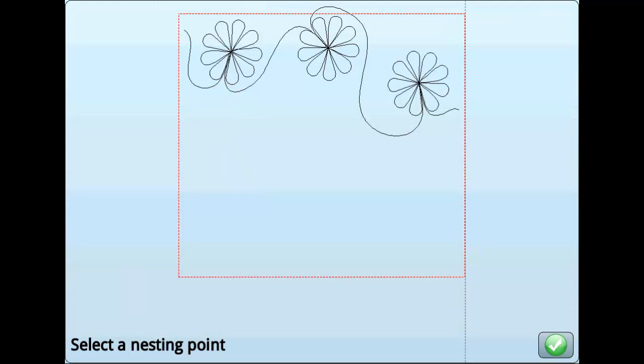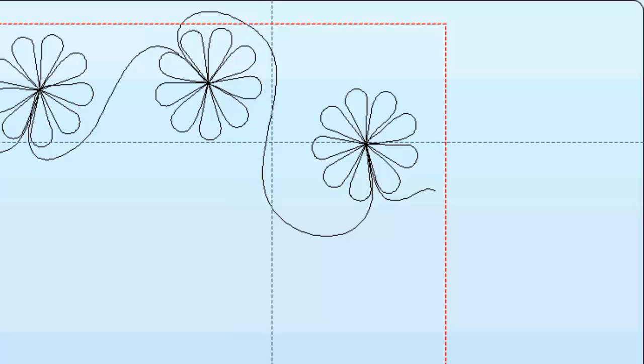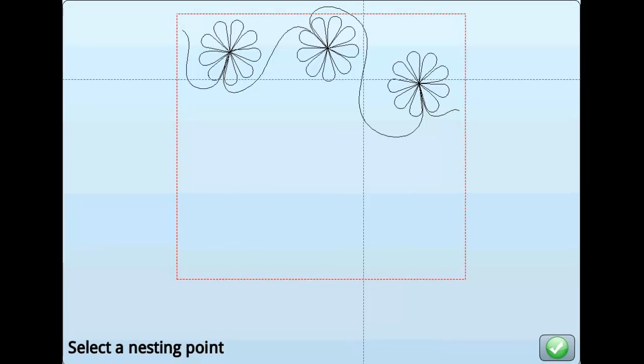After you have selected each of the marks on the rolled quilt, this preview will appear. Move your needle so that the crosshairs showing the needle position are over any point on the pattern. Then press the green check mark.